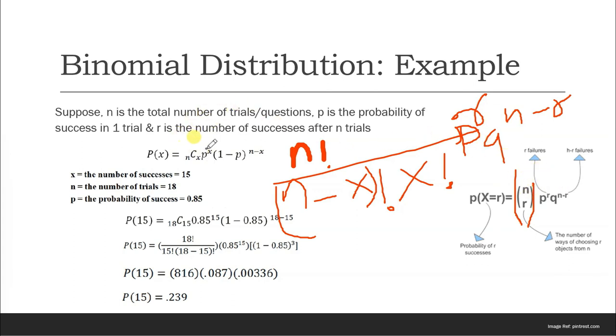Now this part, q to the n minus r, is basically the probability of failure for the x trials.